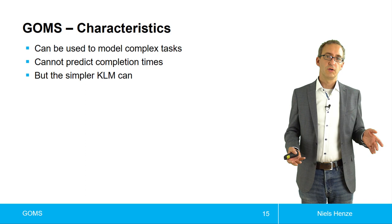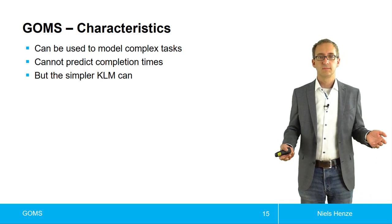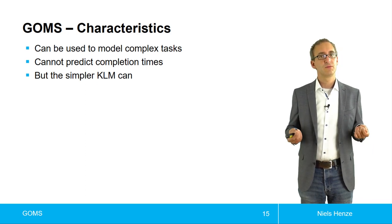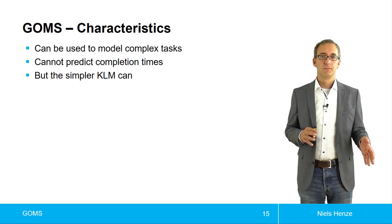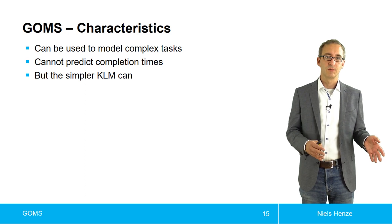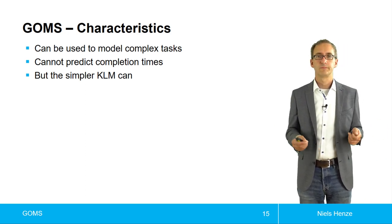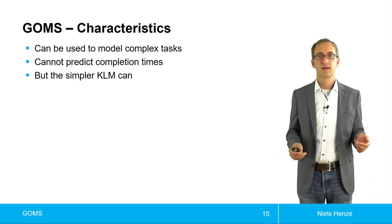The problem with this approach is that it cannot predict task completion times. But the simpler KLM can. So there's a trade-off. With KLM, you cannot really model very complex things. So you end up with dialogues and forms. But then you can predict task completion times. With GOMS, on the other hand, in general, so the standard GOMS, you can model almost any task, but then you don't get task completion times.